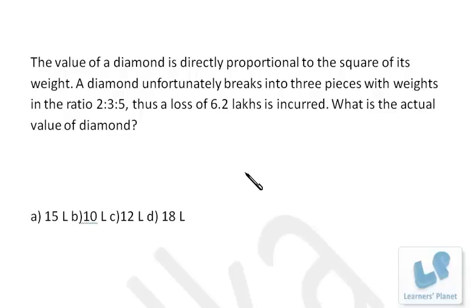Now friends, let's see this problem. The value of a diamond is directly proportional to the square of its weight. A diamond unfortunately breaks into three pieces with weights in the ratio 2:3:5, thus a loss of 6.2 lakhs is incurred. What is the actual value of the diamond?